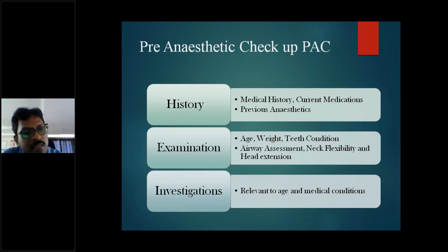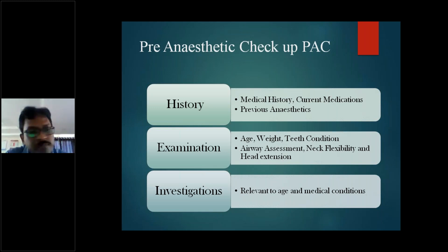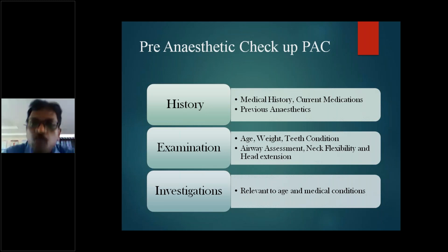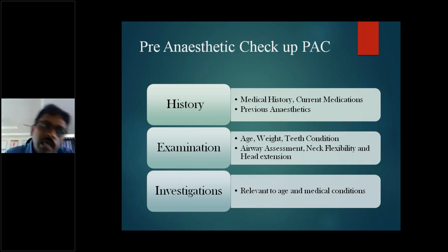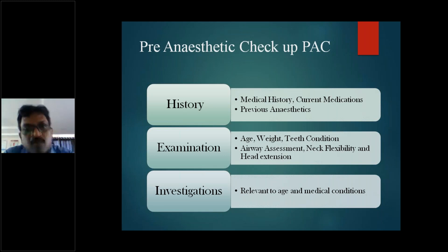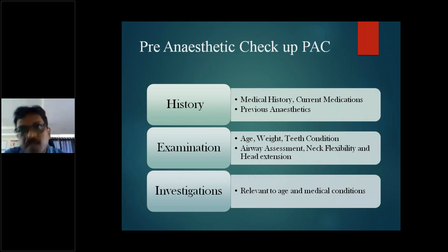Starting by taking the patient to the pre-anesthetic check-up room, we need to check history, examination, and investigations. In the history part, we need to find out his medical history - whether he is diabetic, hypertensive, on any current medications, or has already undergone surgery under any type of anesthesia - so that we can determine the best protocol of GA for the current scenario.